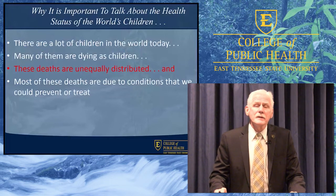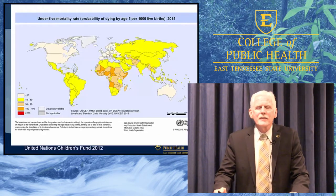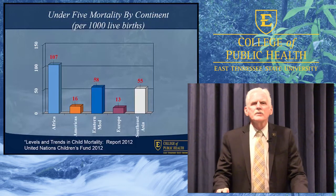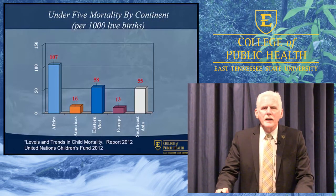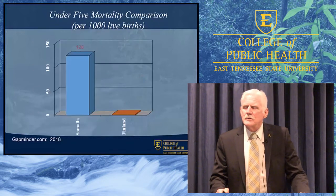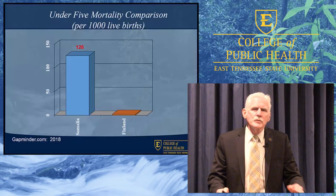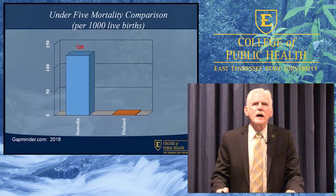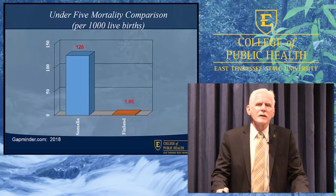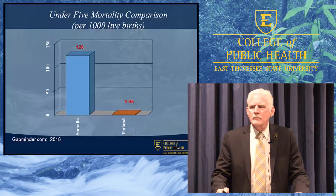Unfortunately, these deaths are not evenly distributed around the world. If you look at this map, you can see those parts of the world where child death is more common. This bar chart looks at continents, and you can see that under-five mortality is eight times higher in Africa than it is in Europe. Somalia has the highest under-five mortality in the world at 126 — that means for every eight babies born in Somalia, one will die before the age of five. At the same time, Finland has the lowest under-five mortality at 1.95 — a 60-fold difference between Finland and Somalia.